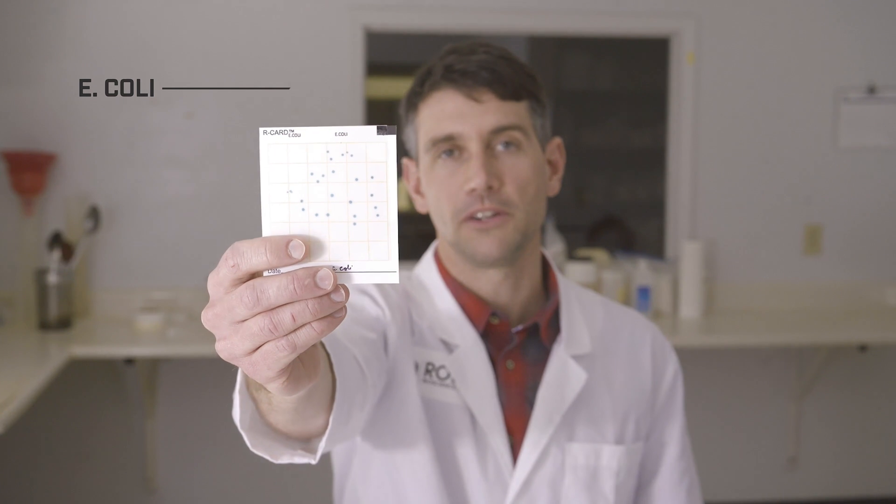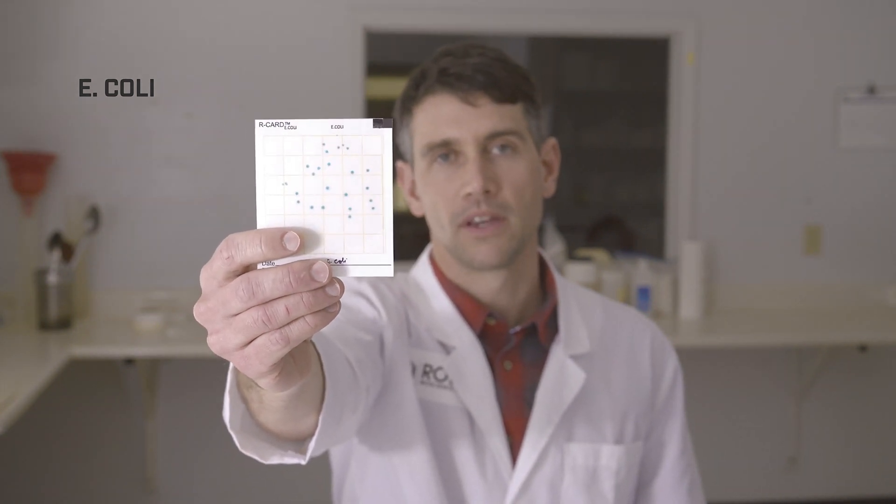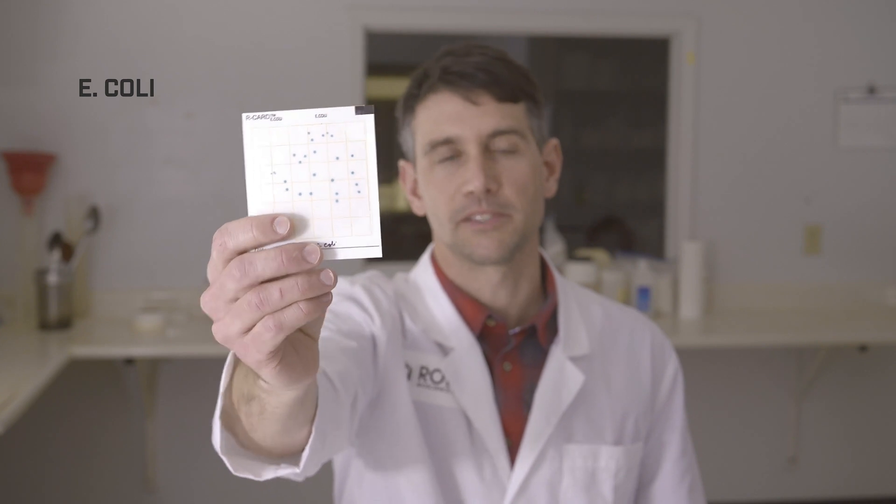Most importantly, before you start to read the results of an R-Card, is to know what color you're looking for in the colonies to identify the presence of specific bacteria. In this first test for E. coli, you're looking for teal colonies. As you can see, there are teal colonies present in the sample. This test is positive for E. coli.